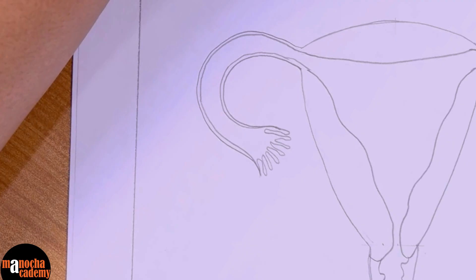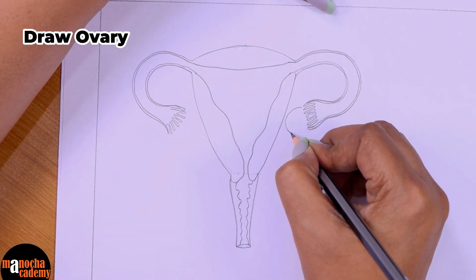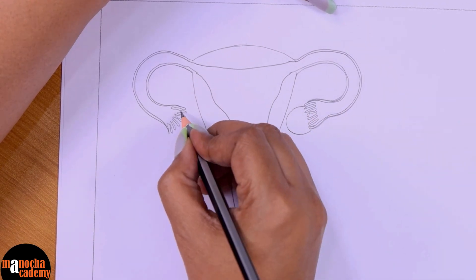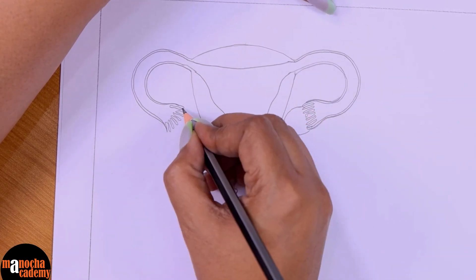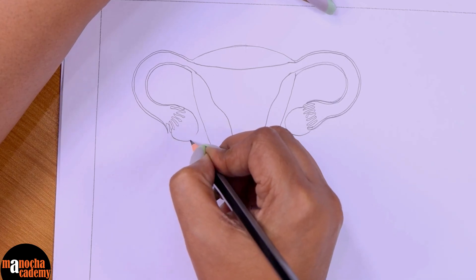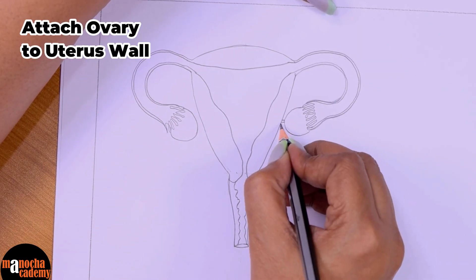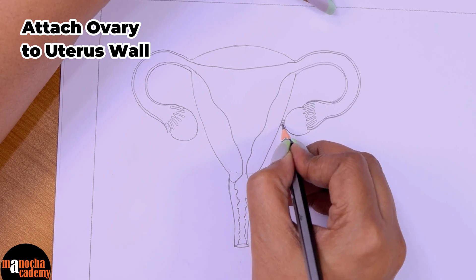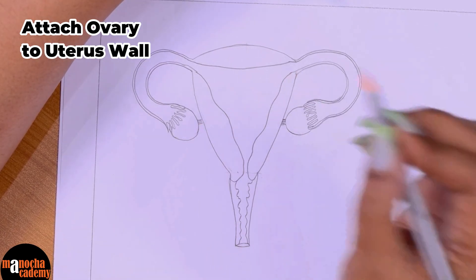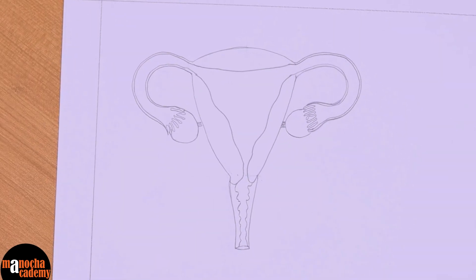The only thing that is now left to draw is the ovary. I will draw the ovary here. The funnel-shaped part fits into the ovary. You can draw the ovary like this and then attach the ovary with a few lines to the wall of the uterus. So the ovary is done, the fallopian tubes are done — the diagram is basically done for us.